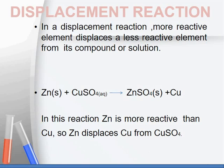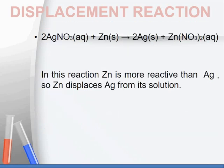You can see an example here. In this reaction, zinc is more reactive than copper. So zinc displaces copper from copper sulfate.